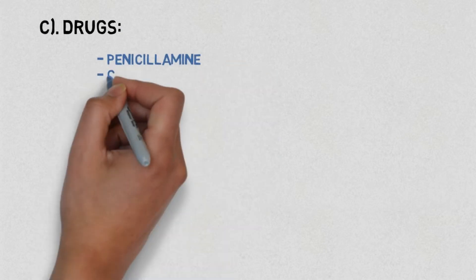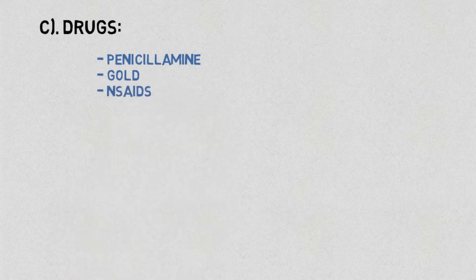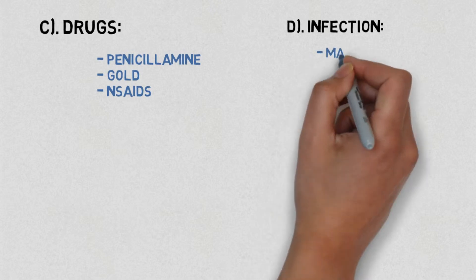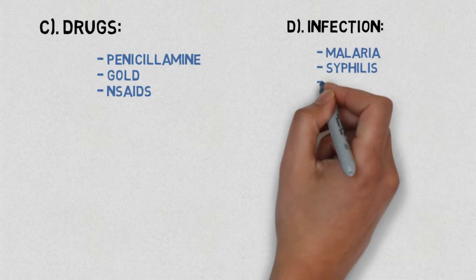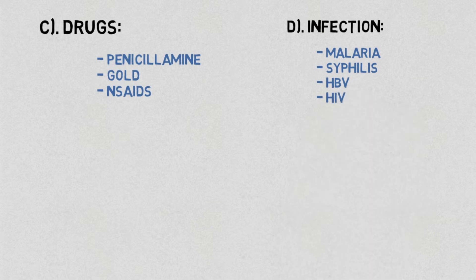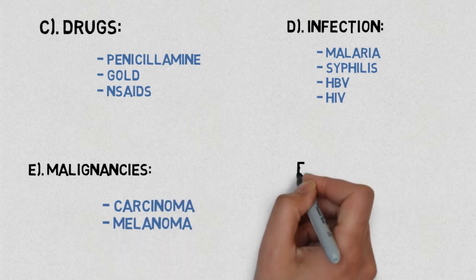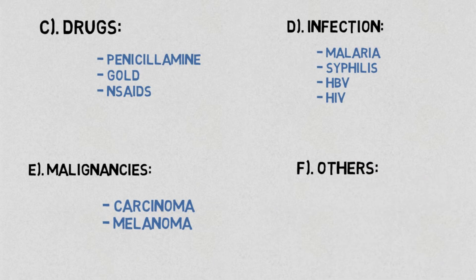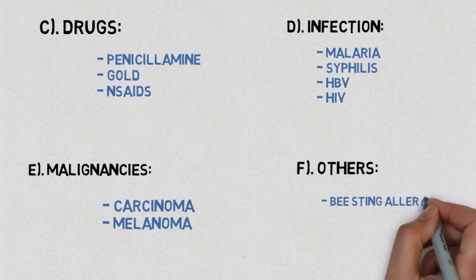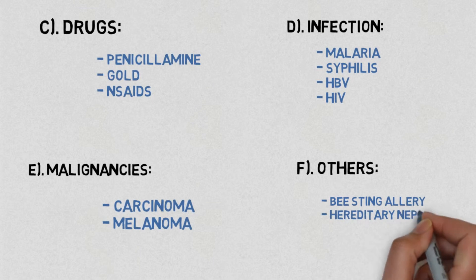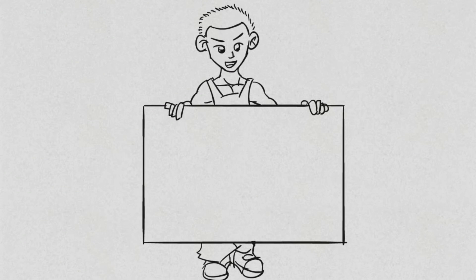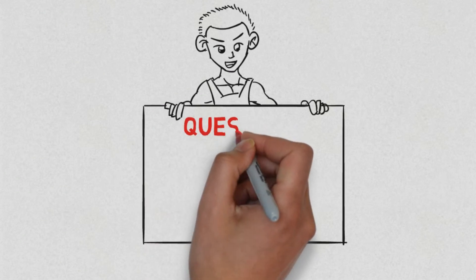Drugs such as penicillamine, gold, and NSAIDs (non-steroidal anti-inflammatory drugs) may also be causes. Infections include malaria, syphilis, HBV, and HIV. Malignancies such as carcinoma and melanoma are also listed, as well as other causes like bee sting allergy and hereditary nephritis disease.